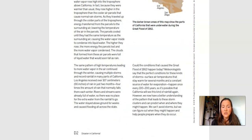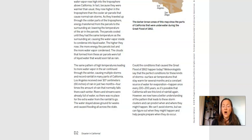The same pattern of high temperatures leading to more water vapor in the air continued through the winter, causing multiple storms and record rainfall in many parts of California. Los Angeles received over 167 centimeters — or 66 inches — of rain in just two months, four times the amount of rain that normally falls there each winter. Rivers and streams were already full of water, so there was no place for the extra water to go, and it stayed above ground for weeks causing flooding all across the state. Meteorologists say that the perfect conditions for these kinds of storms happen once every 100 to 200 years, so it is possible that California will see this kind of rainfall again. However, now we have a better understanding of the pattern that leads to these storm clusters and we can predict when and where they might happen. We can't avoid storms, but we can figure out when they might happen and help people prepare when they do occur.